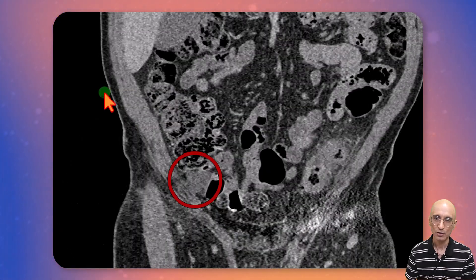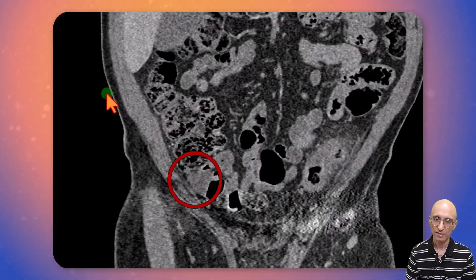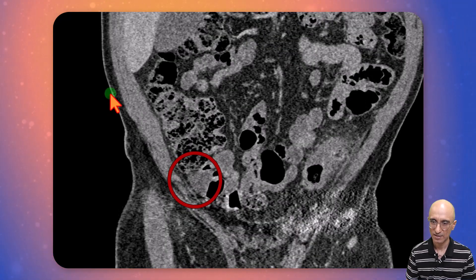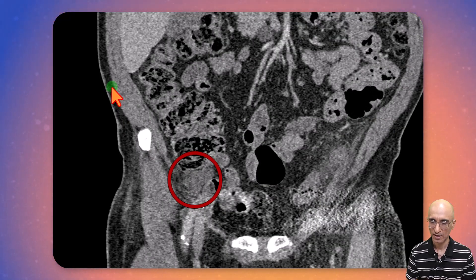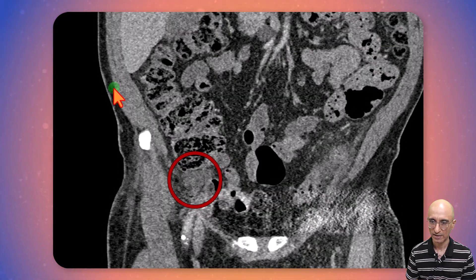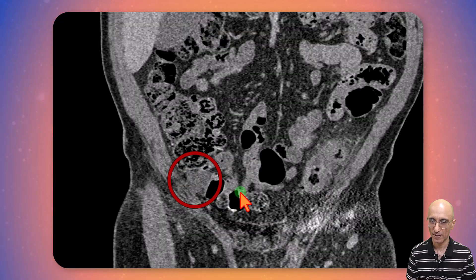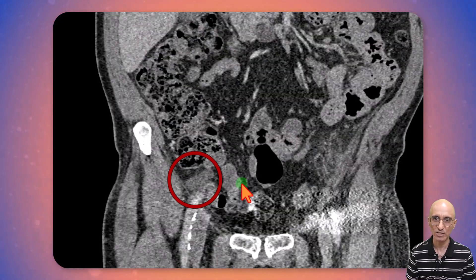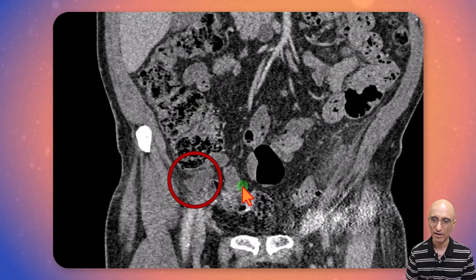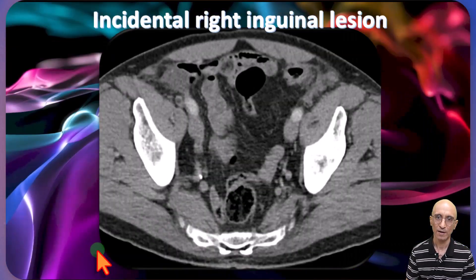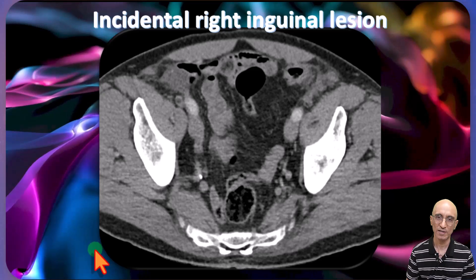I'm going to show you the coronal images. Again we see that lesion described by the radiologist, but if we take a closer look, it has a conical shape in the region of the right inguinal canal. Appearances are consistent with a hernia mesh plug.